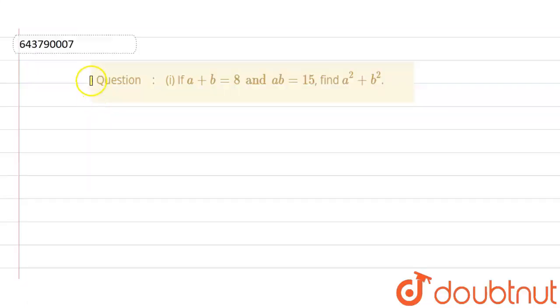Welcome to Doubtnet. The question that was given to us was: if a plus b is equals to 8 and ab is equals to 15, find the value of a square plus b square. So we know the formula that a plus b whole square is equals to a square plus b square plus 2ab.